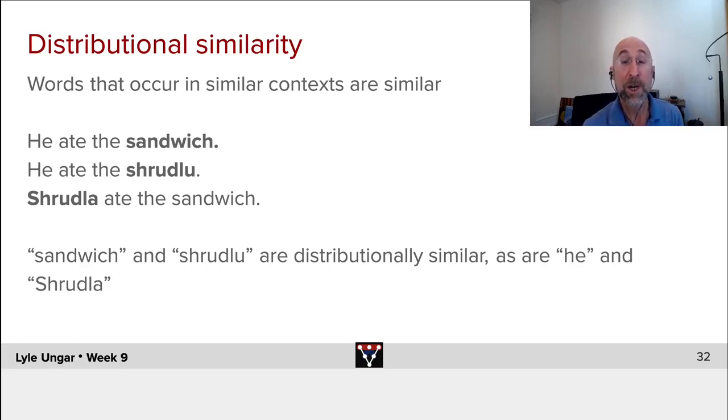Now the key concept behind embeddings is distributional similarity. And the idea is that words that occur in similar contexts are similar. So if you look at the sentence, he ate the sandwich and he ate the shridlu,